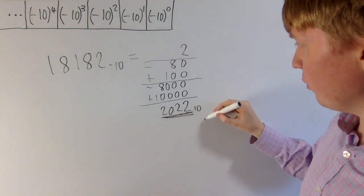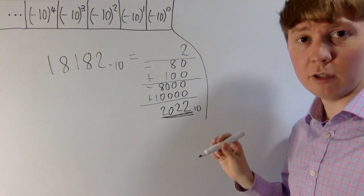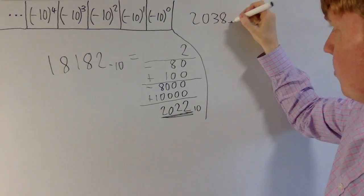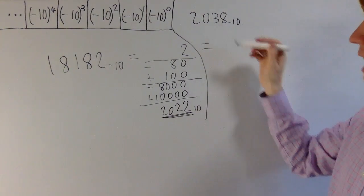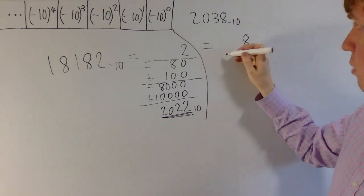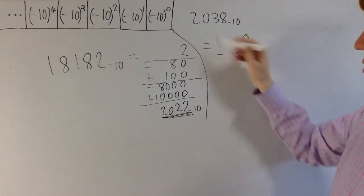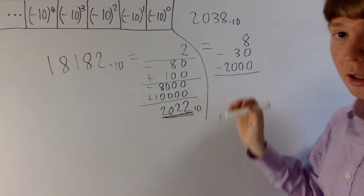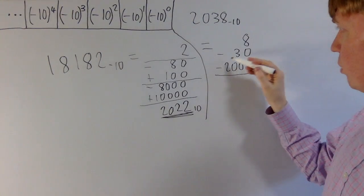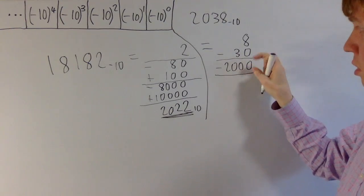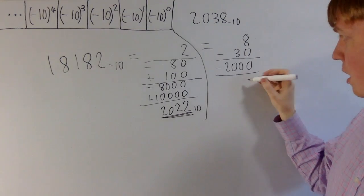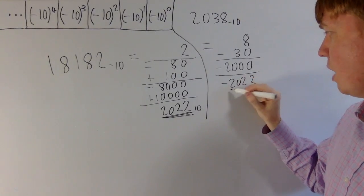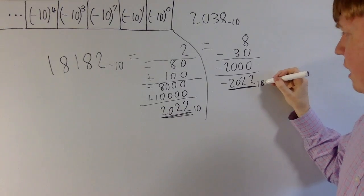We'll have a look at another example, converting again from base minus 10 into base 10. This illustrates something really unique to having a negative base system. So let's start with 2 0 3 8 in base minus 10. The 8 represents 8 ones, so this is fine. Then the 3 represents a contribution of minus 30. The 0 is just 0. And then we get a contribution of minus 2,000 from the 2. So this is going to give us a negative answer: minus 30 plus 8 gives minus 22, and minus 2,000, giving us minus 2,022 in base 10.